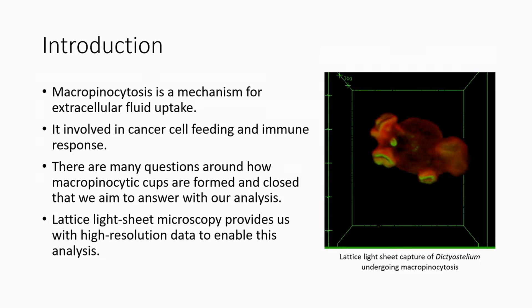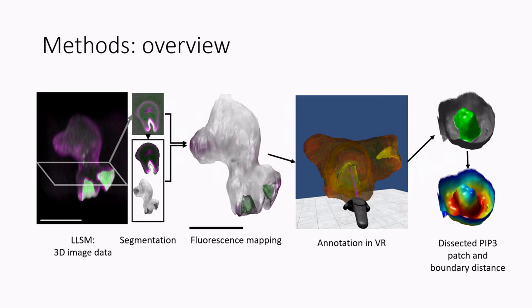So with regards to the methods, we image the cells on the lattice light sheet. It's a really great thing to do to image the cells on because we get a nice high resolution of 0.1 microns, and also temporally we get a three-second frame rate.